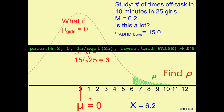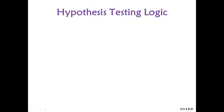Using p-norm with 6.2 as our value, 0 as the mean of the distribution, and standard deviation 15 divided by the square root of 25, the probability is 0.019 — about 0.02. So if our alpha was set at 0.05, we reject the null hypothesis. This doesn't describe what's going on. Girls who play video games have more times off-task than 0, which is a fairly trivial conclusion, but we do this kind of thing all the time.